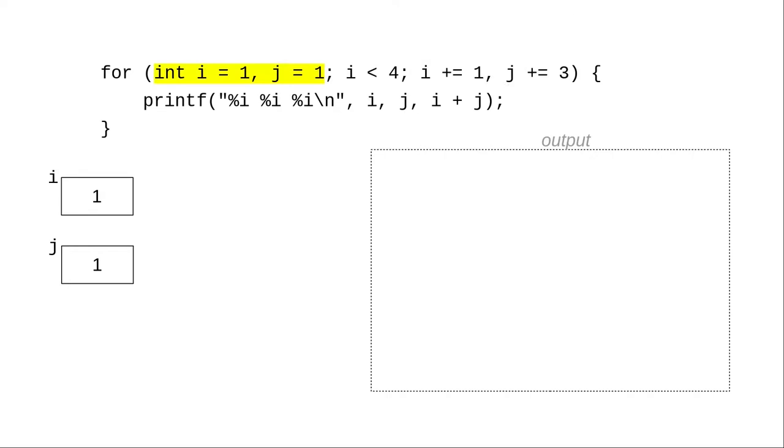The initializer sets both i and j to 1. The continuation test asks if i is less than 4. 1 is less than 4, which means we print the values of i, j, and i plus j.